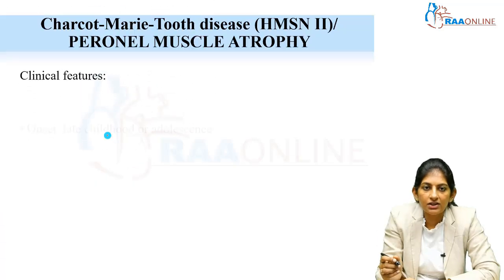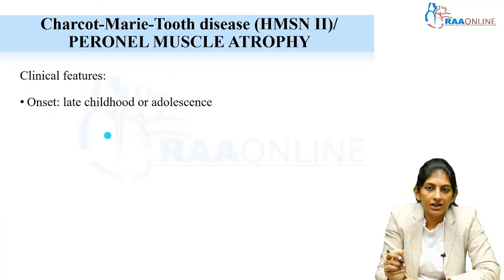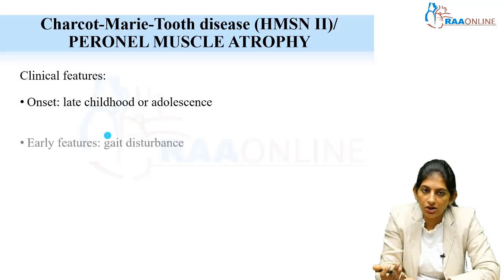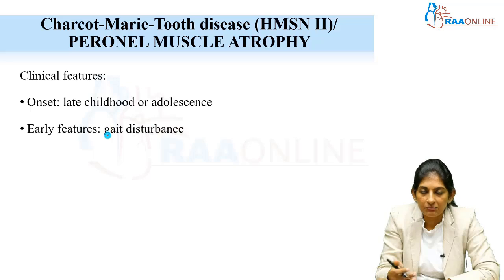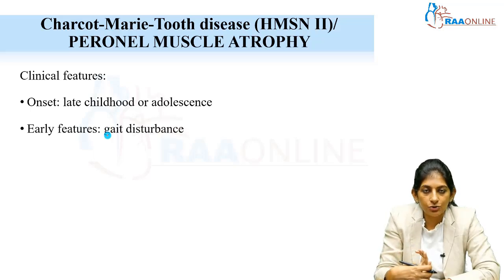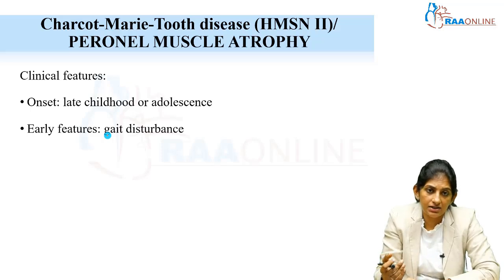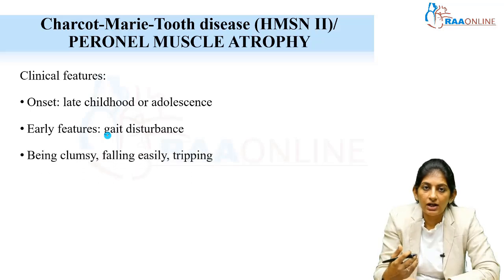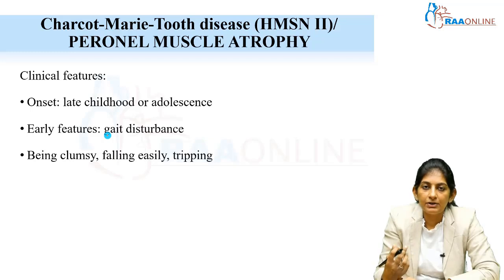Charcot-Marie-Tooth disease is otherwise called peroneal muscle atrophy. In pediatrics, onset is mostly in late childhood or adolescence. The initial feature is that patients come to us with gait disturbances — a clumsy walk. In advanced stages they can present with foot drop.